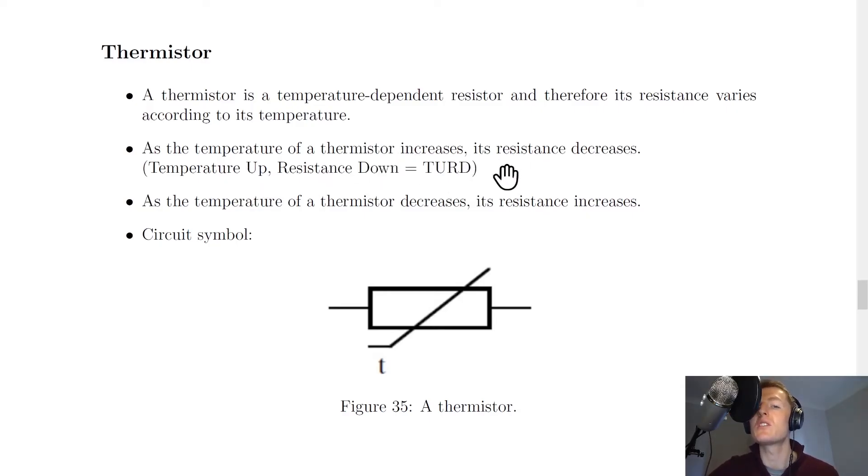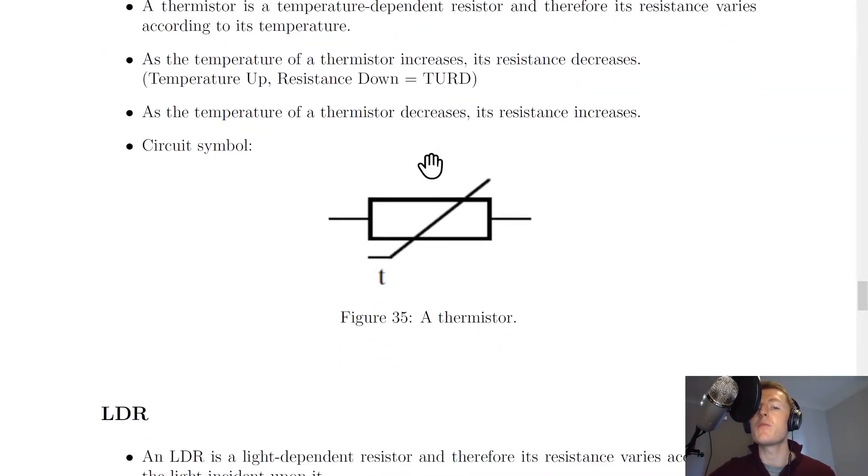So we can use this funny word TURD to try and remember the rule for thermistors. But even though we're saying temperature up, resistance down, the opposite is also true. So as the temperature of a thermistor decreases, its resistance increases. So temperature down, resistance up also holds true. Here's the circuit symbol for a thermistor.